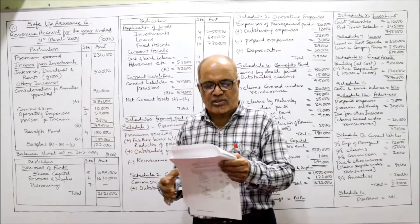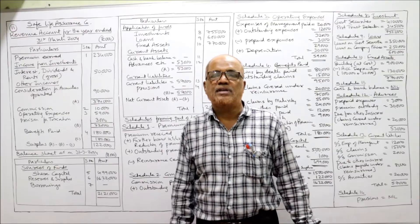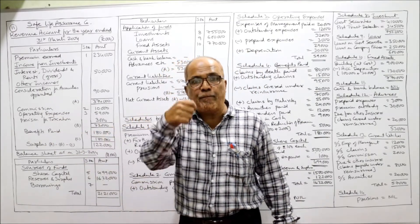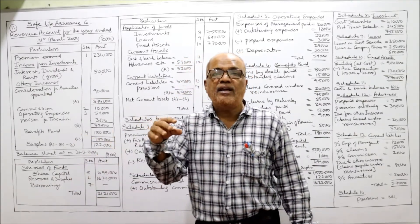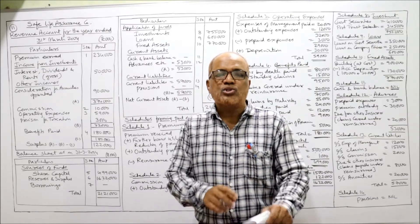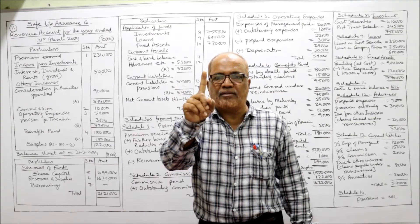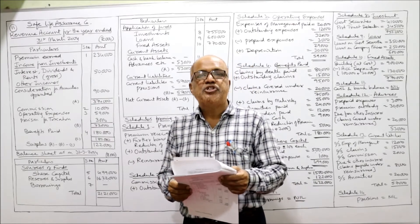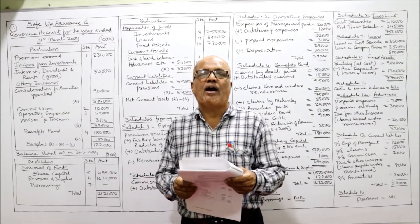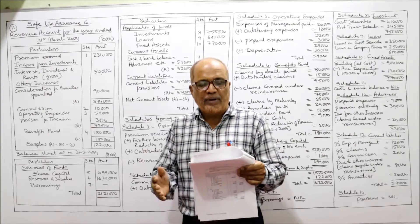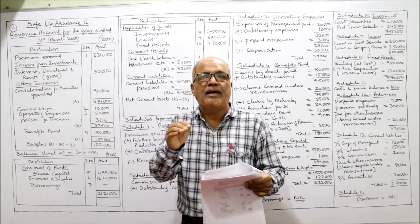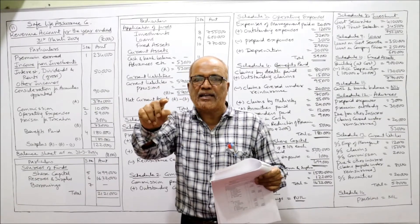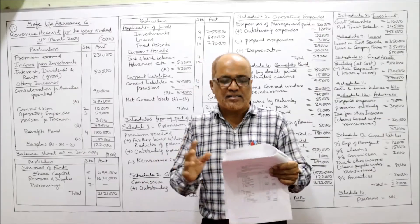Annuities paid will be taken in Schedule 4 under benefits paid. However, annuities outstanding is a liability — it appears only once in the trial balance and will be taken in Schedule 13, current liabilities. Capital — Schedule 5. Building depreciation account represents accumulated depreciation on building — one lakh — which will be deducted from building in Schedule 10. So in Schedule 10, fixed assets: building nine lakh less accumulated depreciation one lakh equals eight lakh in the outer column.